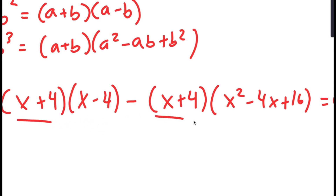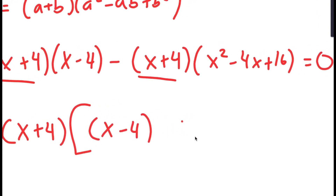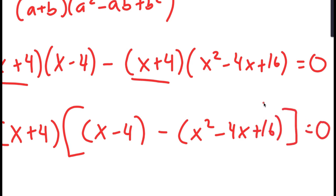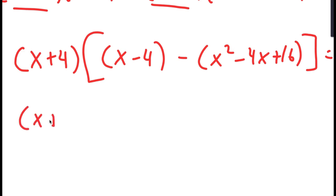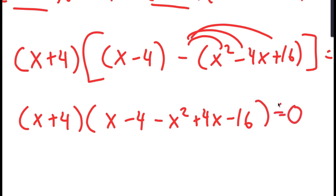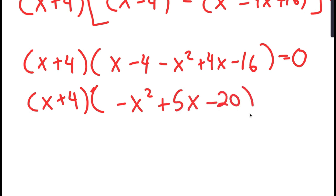Because both terms have x plus 4 in them, I can factor out x plus 4. So I get x plus 4 times the quantity x minus 4 minus x squared minus 4x plus 16, which equals 0. Distributing the negative sign, this becomes x plus 4 times negative x squared plus 5x minus 20, equals 0.